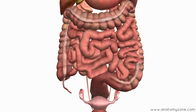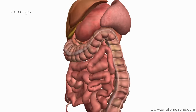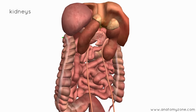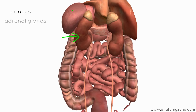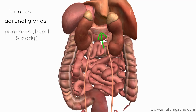So the retroperitoneal organs are the kidneys at the back — you can see the kidneys here. And the adrenal glands, which sit on top, are retroperitoneal. We've got the head and the body of the pancreas, which are retroperitoneal. The tail is actually intraperitoneal.